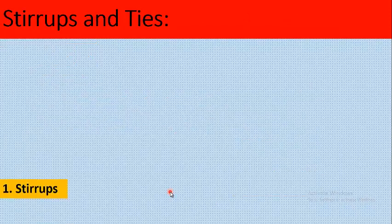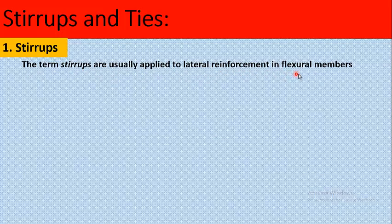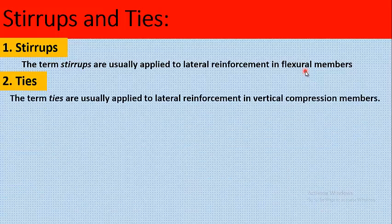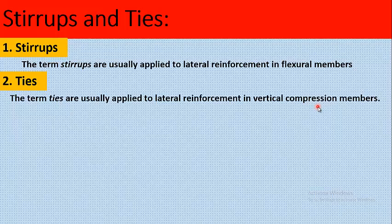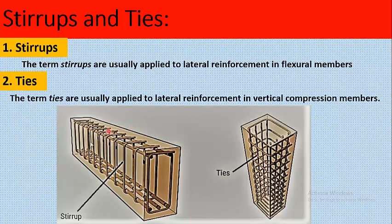What is the difference between stirrups and ties? The term stirrups is usually applied to lateral reinforcement in flexural members, such as beams, which are subjected to bending. The term ties is usually applied to lateral reinforcement in vertical compression members, which are columns. As you can see in this picture, the rectangular reinforcement in a beam is called a stirrup, while the same type of reinforcement in a column is called ties.